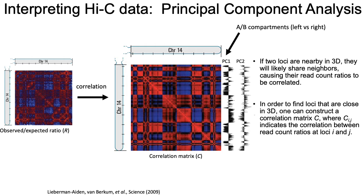The correlation will be high when loci i and j share a lot of neighbors in the ratio matrix. If two loci are close in 3D space in the nucleus, they will tend to interact, and the other loci they're each individually interacting with will also tend to be shared — because that means everybody is in the same region of 3D space in the nucleus.